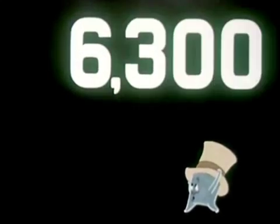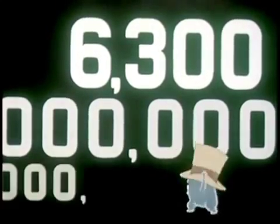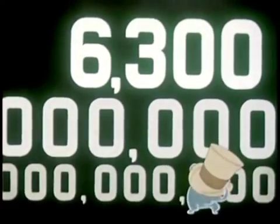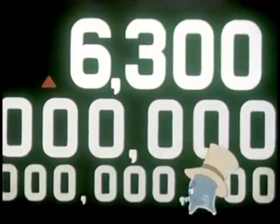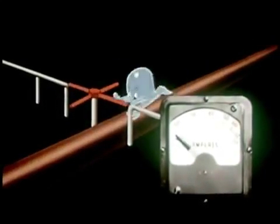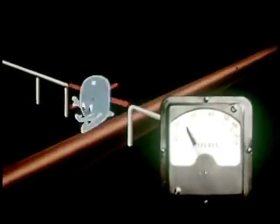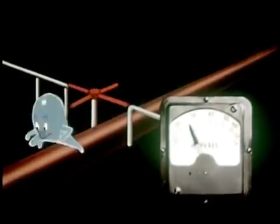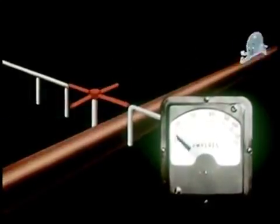One ampere — now hold on to your hat — is six billion, three hundred million, billion electrons passing any given point in one second. Current or amperage, then, is the number of electrons that pass a given point in a given time.